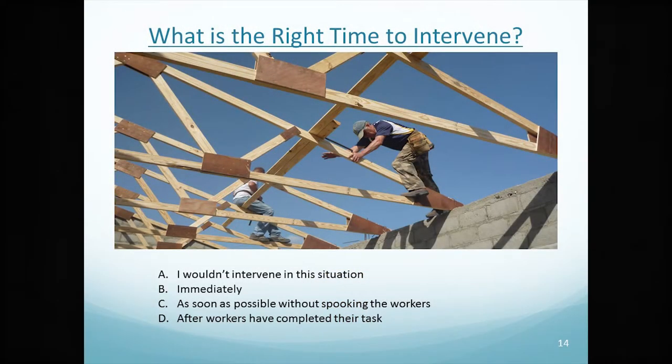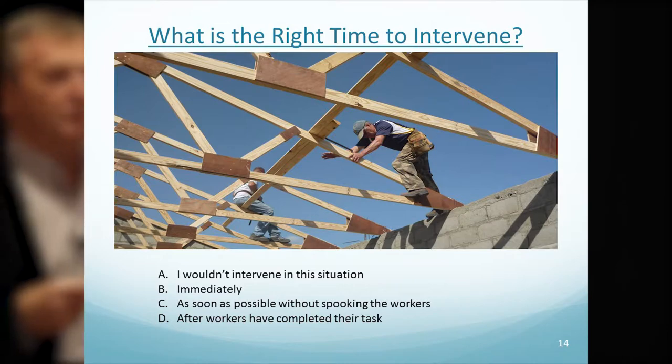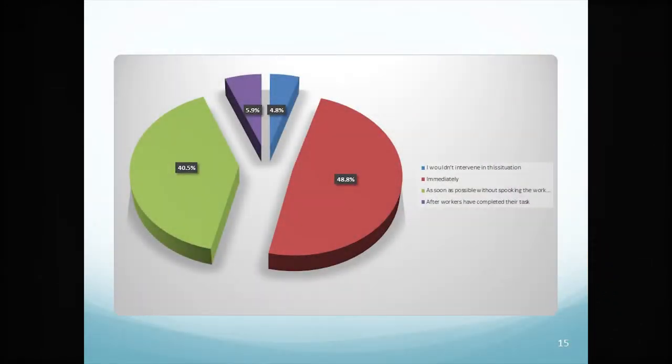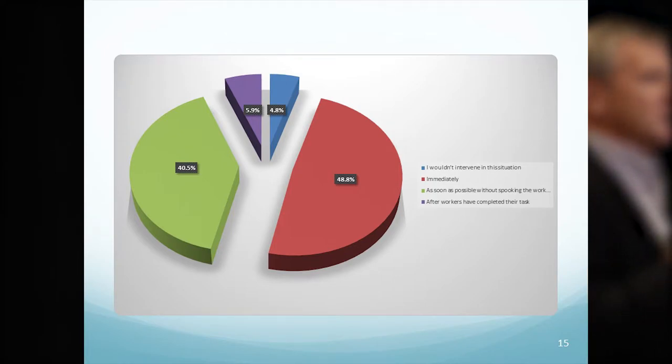How severe does the consequence of the unsafe act have to be before you would intervene — life-threatening, lost time, medical aid, restricted work, or minor first aid/near miss? The answer is all of the above. It doesn't matter the severity; if you see potential for someone to get hurt, it's the time and place to intervene. When asked about the right time to intervene, 49% said immediately, closely followed by as soon as possible without spooking the workers — both valid answers.